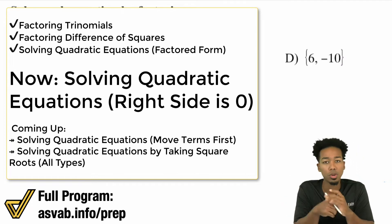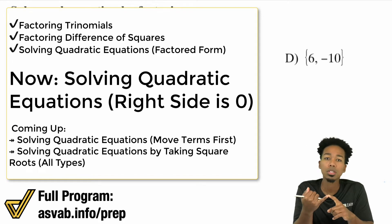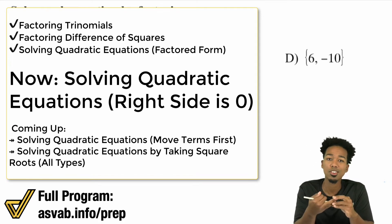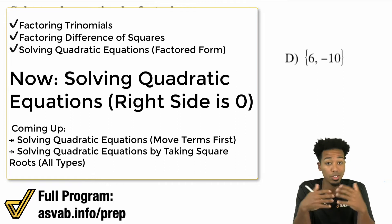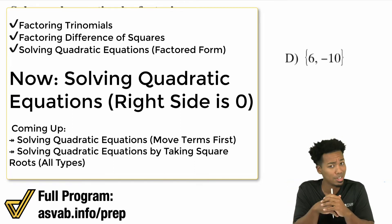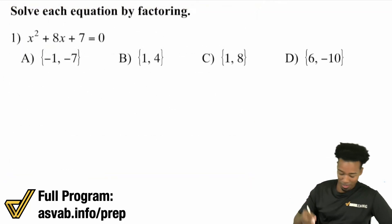We're solving a quadratic equation and it's going to require us to know how to factor a trinomial, and on top of that we need to know how to apply the zero product property. Those two things are coming together here, and once you know those two things and have a good grip on them, this is going to be pretty straightforward for you. So with that said, let's go ahead and get into it.